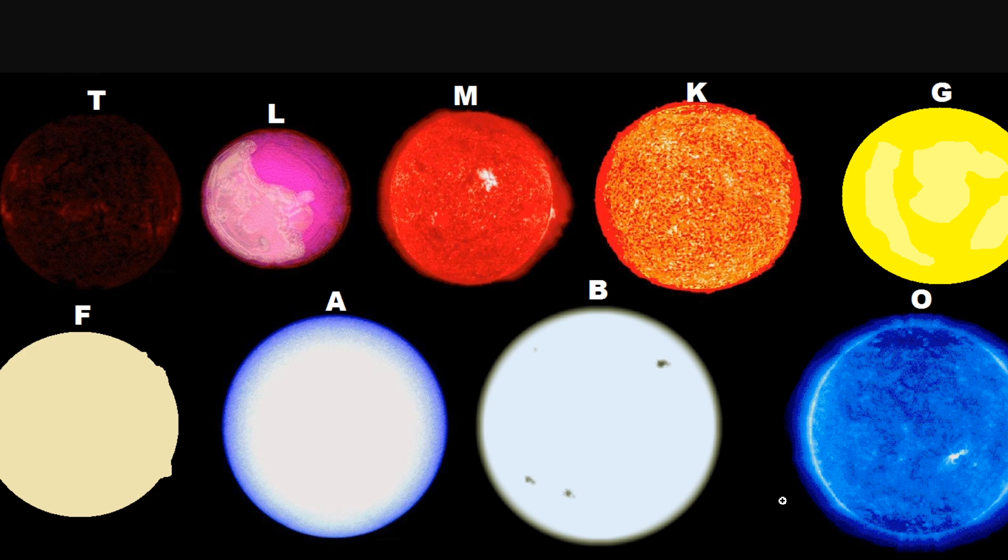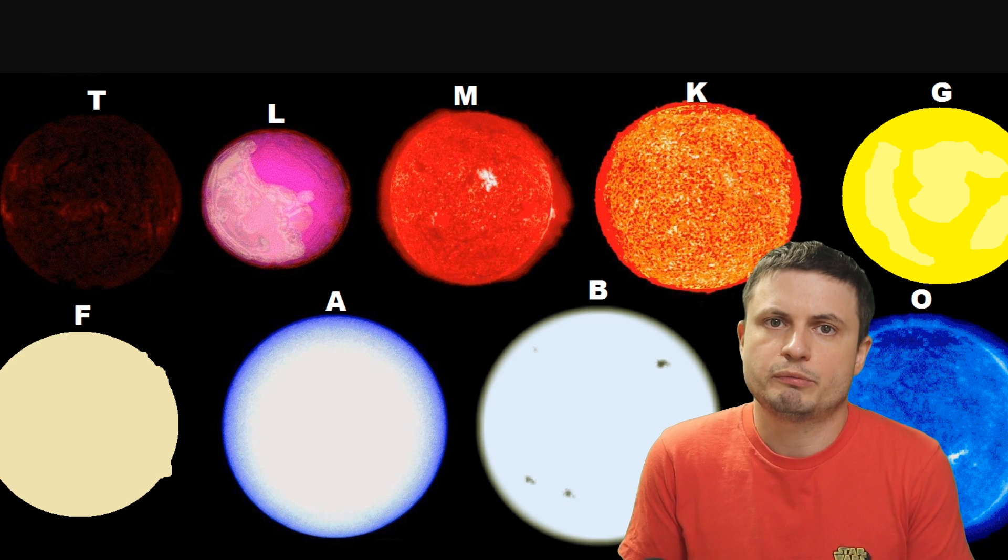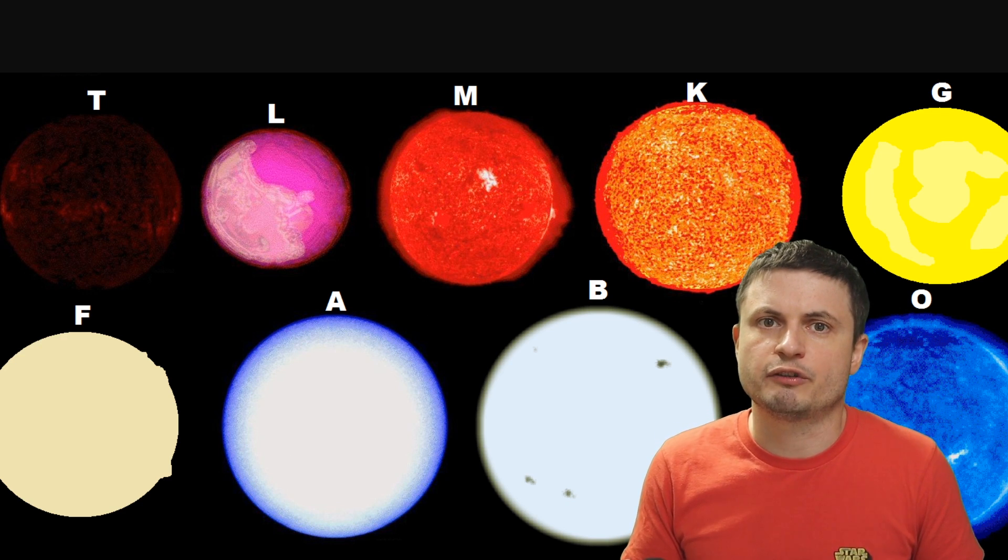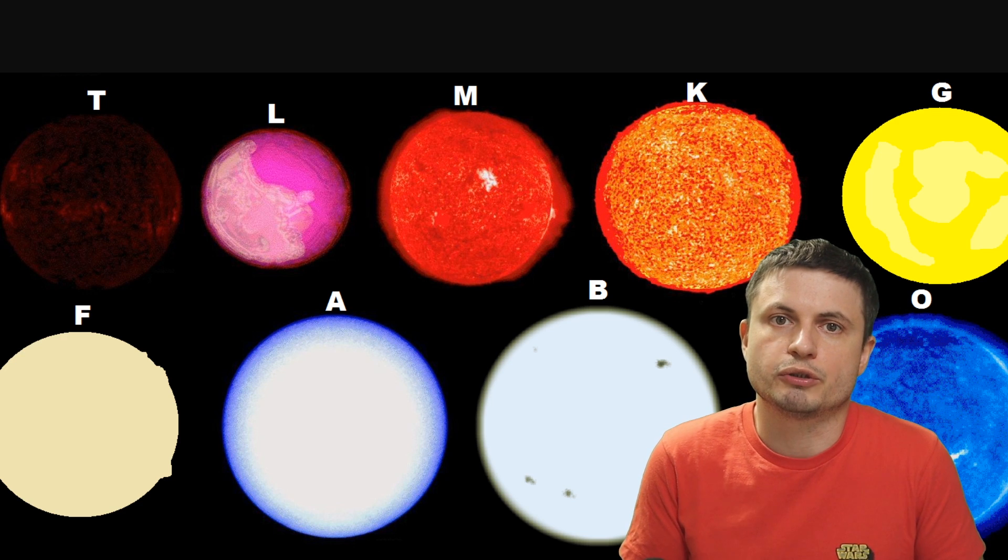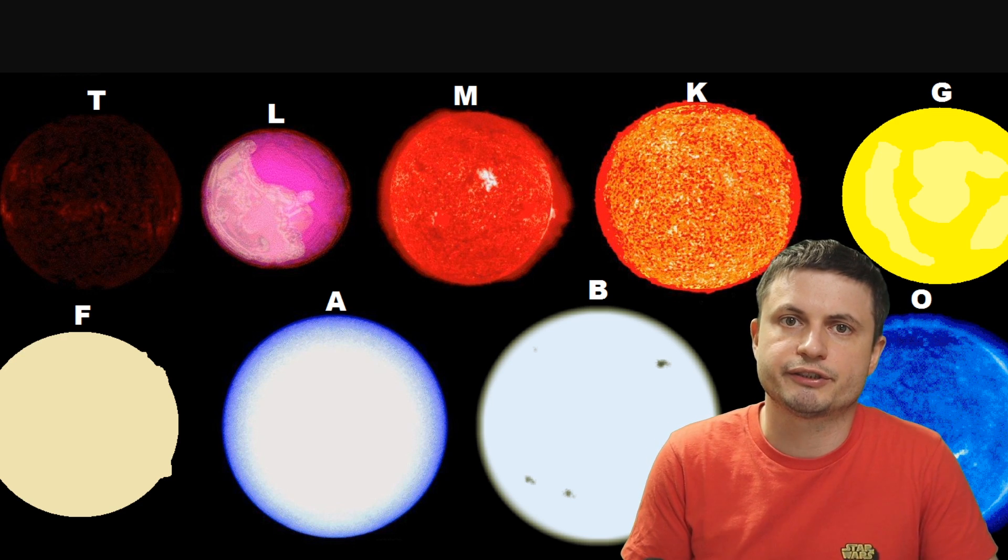Whereas for example much larger much more massive O-type or B-type stars or even A-type today we believe are either way too massive and produce too much x-ray and a lot of other dangerous radiation or simply don't live long enough because a lot of them usually go supernova after only a few million years to give any planet a chance to develop any habitable conditions on the surface.